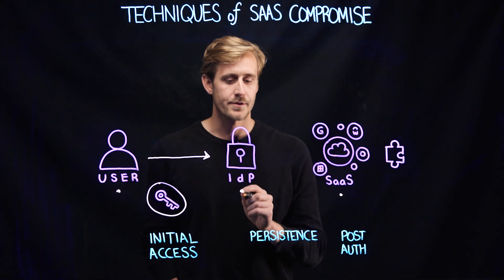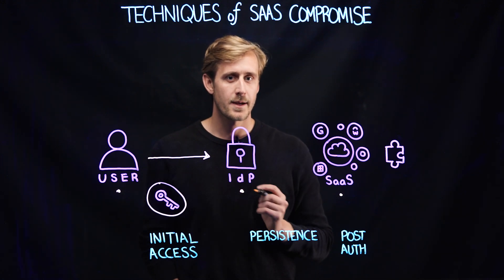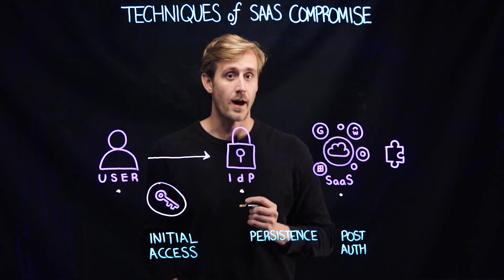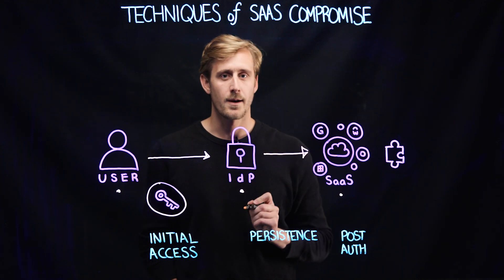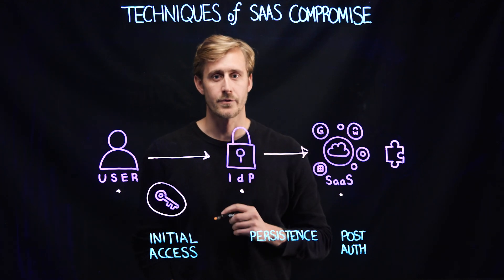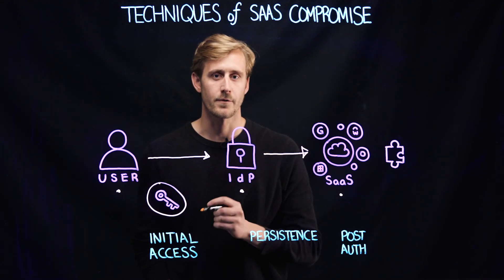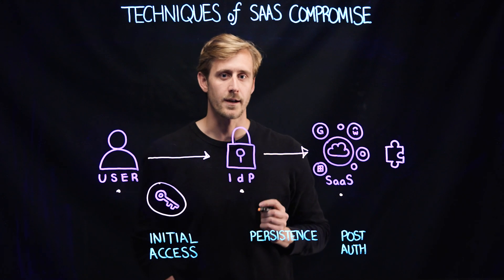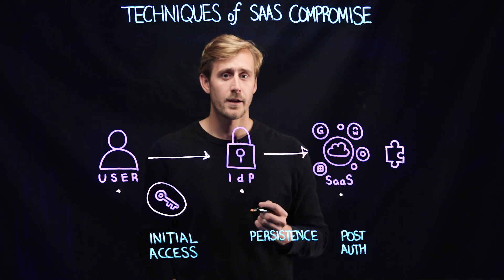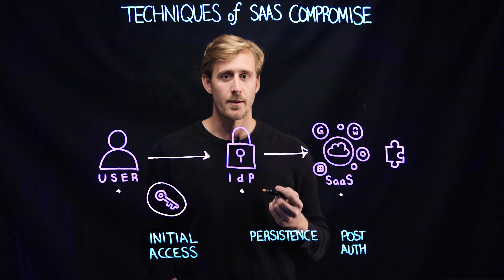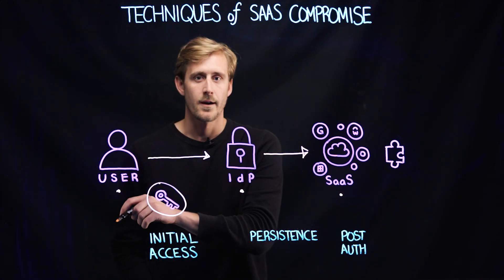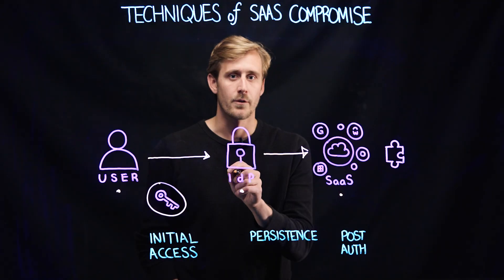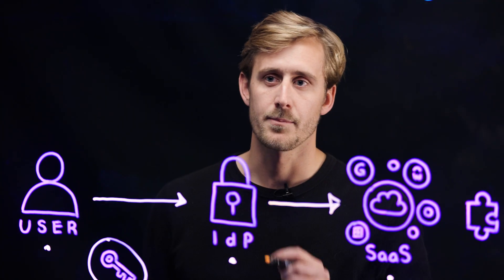Once the attackers are at the IDP, how do they maintain persistence? How do they stay there? Well, attackers are commonly adding their own MFA devices so that they don't have to go through this flow once again. Some attackers may even create their own user accounts with their own MFA devices, creating a new user and thus going through the flow to get to this IDP step.